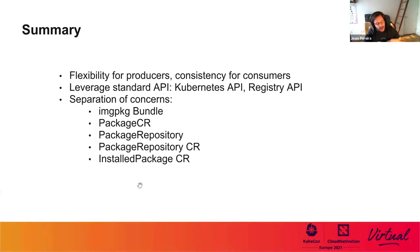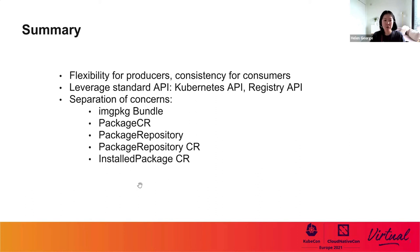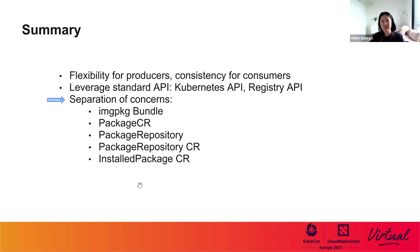So what did we learn here today? We demonstrated that the package management workflow is much simplified for consumers. There's consistency for consumers because they do not need to know the underlying tools that the producers used, while it provides flexibility for producers to still pick and choose whichever tools they'd like. We also showed how various custom resources leverage standard APIs like the Kubernetes API and registry API, making it easier for new users to learn how KApp Controller works and reaping the benefits of standard API reliability. Finally, the different custom resources and concepts follow Unix philosophy with well-defined boundaries and separations of concerns.